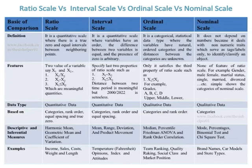Examples of ratio scales are income, sales, costs, weight, and length. Examples of interval scales are temperature in Fahrenheit, opinions, index, and attitudes. Examples of ordinal scales are team ranking, quality ranking, social class, and market position. Examples of nominal scales are brand names, car models, and store types.